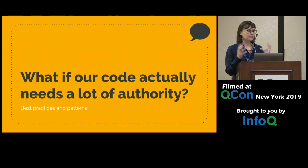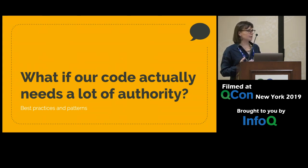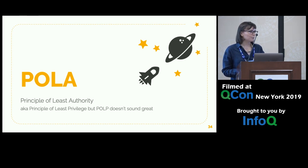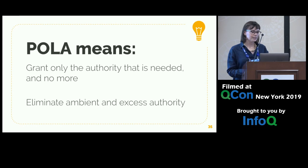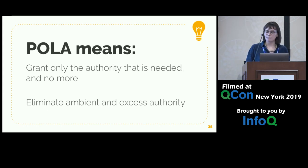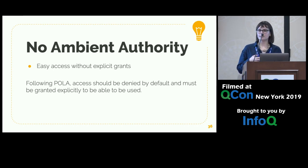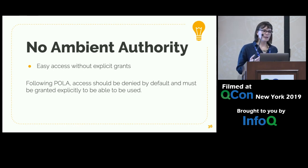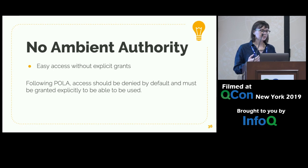Now you might say, isolation is great, but my code needs to do things. It needs access to the file system and the network. So what do we do when our code actually does need a lot of authority? Well, there's POLA — the Principle of Least Authority, also known as the principle of least privilege. POLA means we should grant only the authority that is needed and no more. We should eliminate ambient and excess authority. Ambient authority is easy access without any specific grants — in our example, the attacker could just say require and get FS or HTTPS without asking anyone.